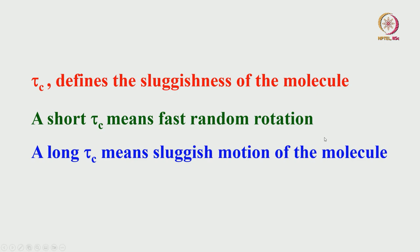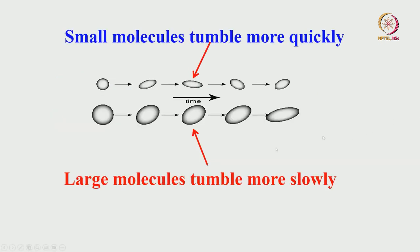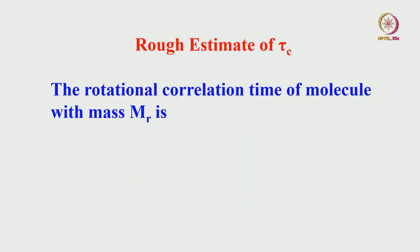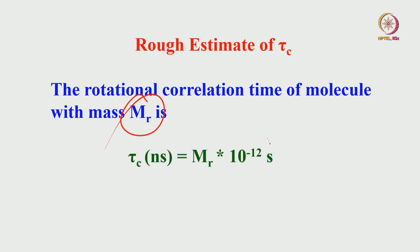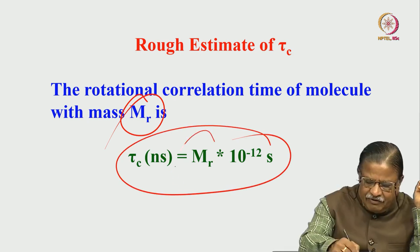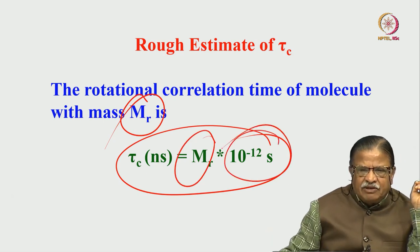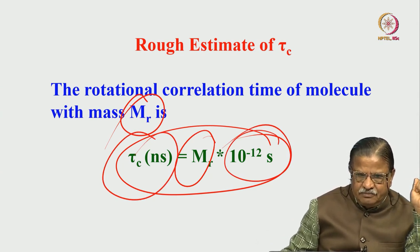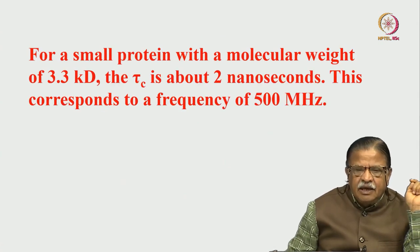A long correlation time means sluggish motion of the molecule. Small molecules tumble more quickly; large molecules tumble more slowly. We can make a rough estimate of the correlation time for a given molecular weight M_R. This rough estimate — multiplied by 10 to the power of minus 12 seconds — tells us the correlation time in nanoseconds. So molecular motions are within the nanosecond scale.